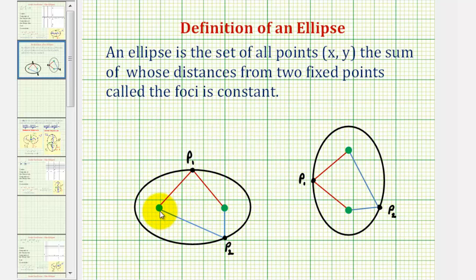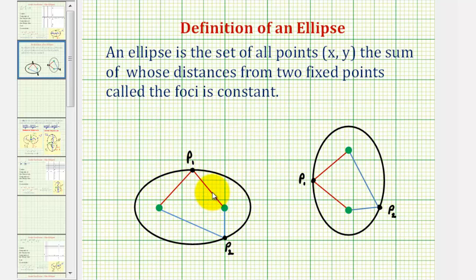For example, if these two green points are the two fixed points, the black graph is the ellipse, which means for any point on the ellipse, the sum of the distances to the two green points would always be the same. So if we found the length of these two red segments, the sum of the lengths would be the same as the sum of the lengths of the two blue segments, and this would be true for any point on the ellipse.